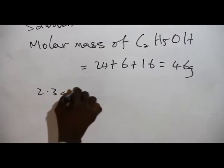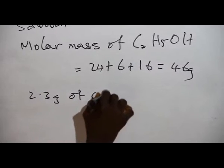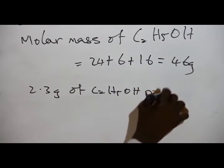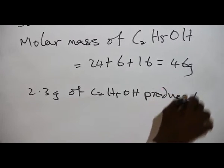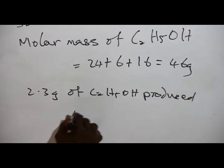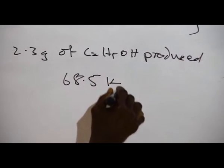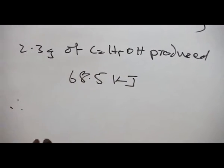2.3 grams of ethanol produced 68.5 kilojoules, and therefore, we need to calculate the heat per mole.